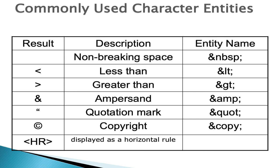There are some commonly used character entities: less-than, greater-than, ampersand, double quotes, copyright, and HR. For non-breaking space, we use &nbsp;. For less-than, we use &lt;. For greater-than, we use &gt;. For ampersand, we use &amp;. For double quotes, we use &quot;. For copyright symbol, we use &copy;. And for horizontal rule, we use the HR tag.